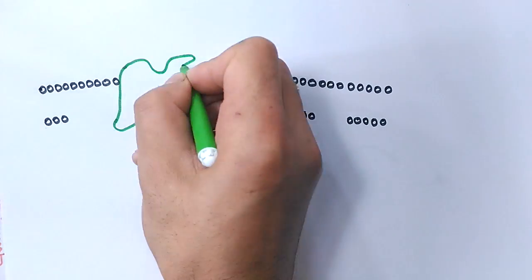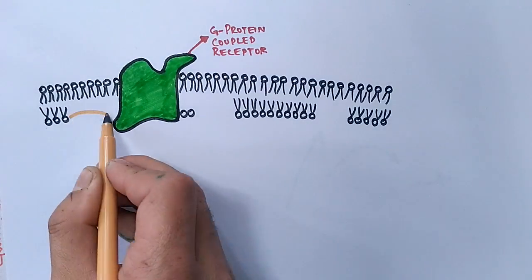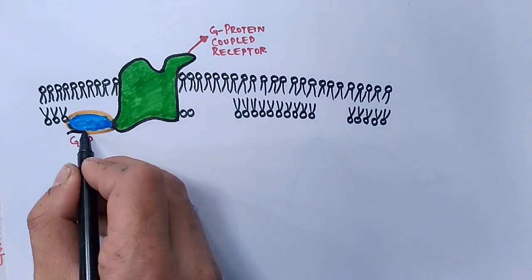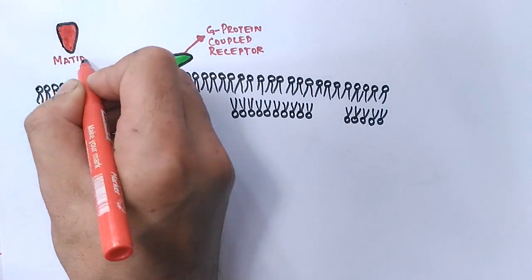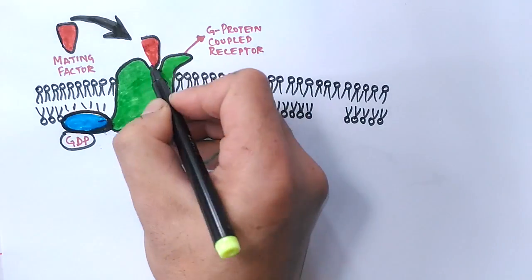In the signaling pathway, the yeast cell has a G protein coupled receptor, and GDP is bound to the G protein when it's in an inactive state. When the mating factor comes in and binds with the receptor, as you can see in the diagram.